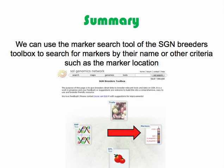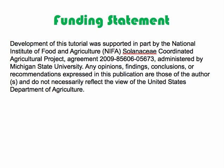In summary, we can use the marker search tool of the SGN Breeders Toolbox to search for markers by their name or other criteria such as the marker location. Thank you.